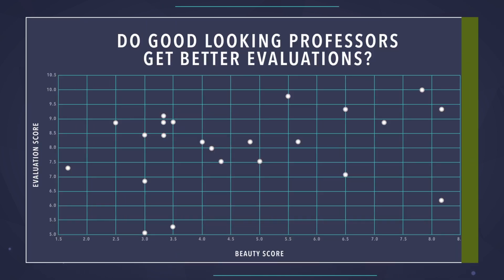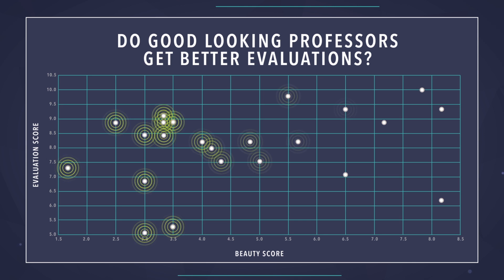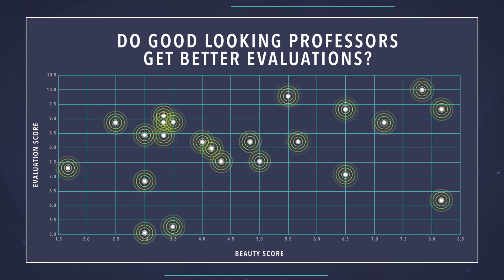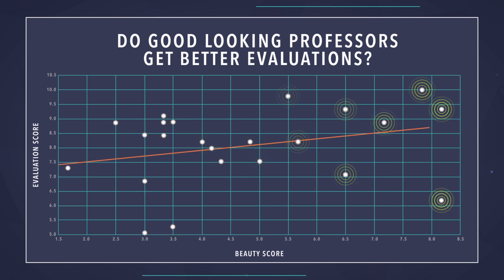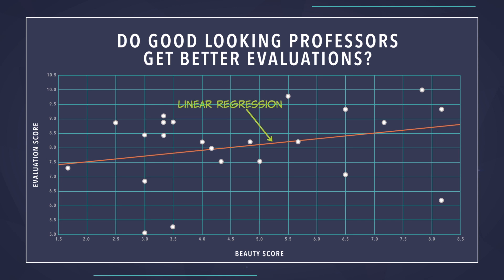With scatter plots, it can sometimes be hard to make out the exact relationship between two variables, especially when the values bounce around quite a bit as we go from left to right. One way to cut through this bounciness is to draw a straight line through the data cloud in such a way that this line summarizes the data as closely as possible. The technical term for this is linear regression. Later on, we'll talk about how this line is created, but for now we can assume that the line fits the data as closely as possible. So, what can this line tell us?